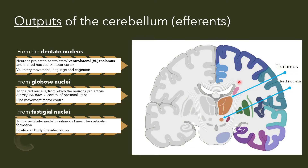Now let's talk about efferents — the outputs of the cerebellum. This depends on the deep cerebellar nucleus from which the signal originates. The largest nucleus, the dentate nucleus, projects to the contralateral — meaning the other side of the brain — ventrolateral thalamus. The ventrolateral thalamus can in turn send signals directly to either the primary motor area or the premotor area, initiating voluntary movement.